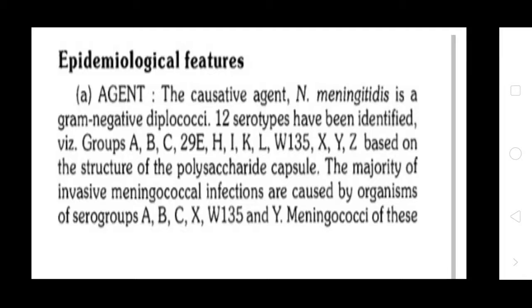Neisseria meningitidis is a gram-negative diplococci. Twelve serogroups have been identified: Group A, B, C, 29E, I, K, L, W135, X, Y, and Z, based on the structure of their polysaccharide capsules.